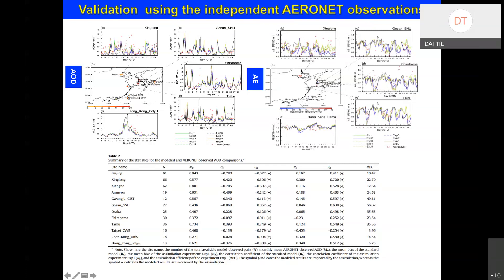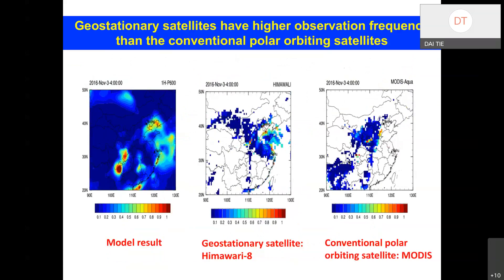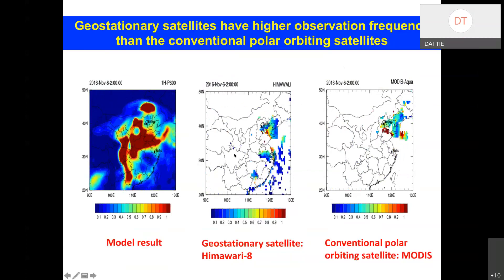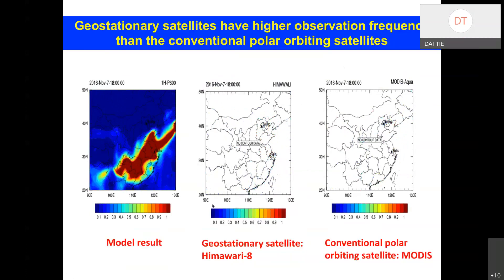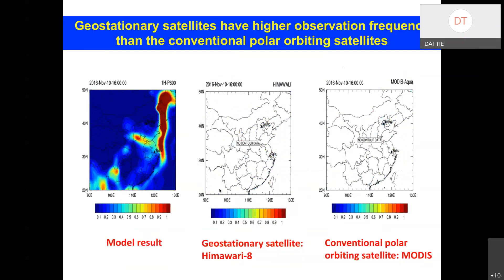The optical observation operators are suitable. Over 12 sites, we find that bias is improved at over 11 sites, and correlations are also improved. Compared to polar-orbiting satellites, geostationary satellites have higher observation frequency, so we extended the assimilation system to assimilate observations from the new geostationary satellite Himawari-8.